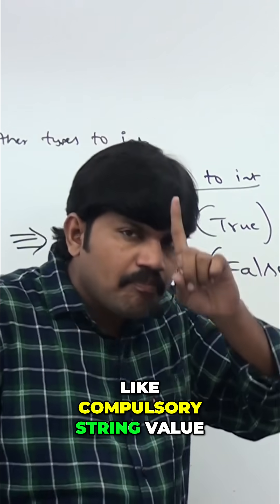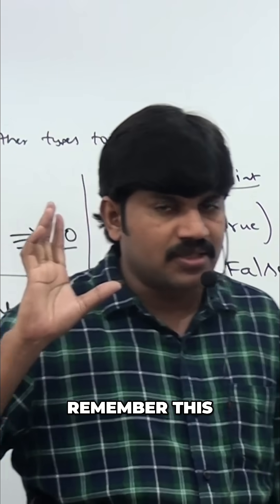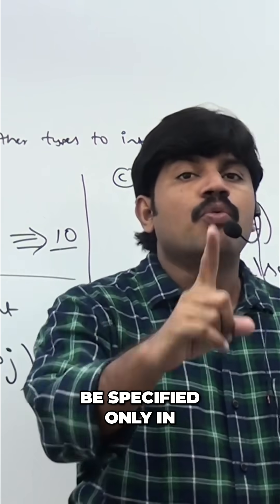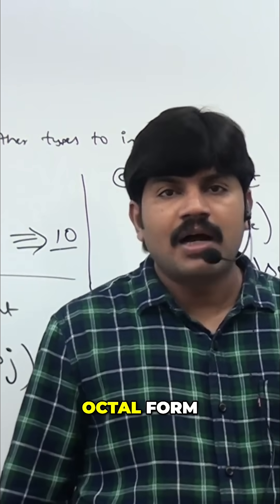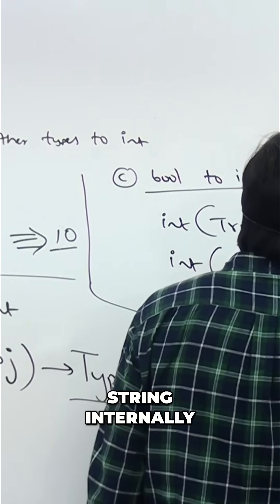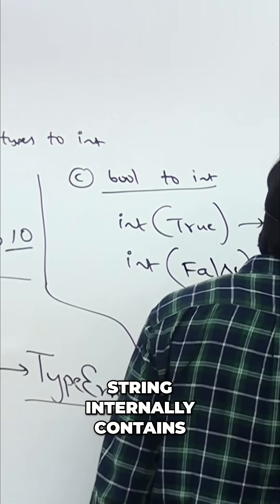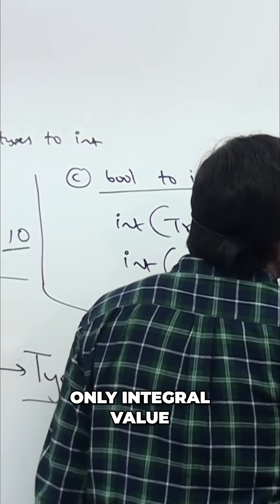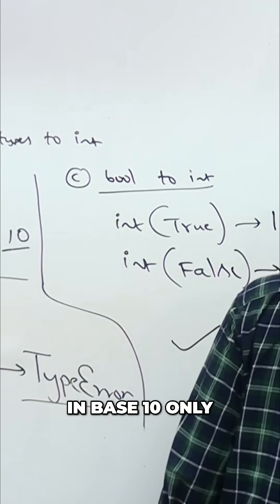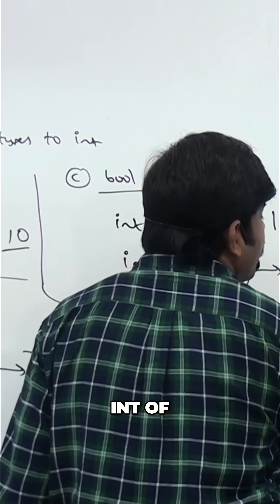Let me talk about that rule clearly. Compulsory: a string value internally contains integral value. This string internally contains only integral value that should be specified in base 10 only — decimal form only. Binary form, octal form, and hexadecimal forms are not allowed.